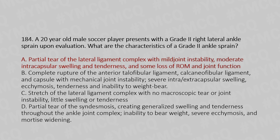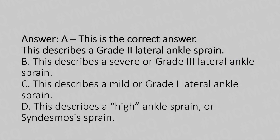And the answer is Option A: partial tear of the lateral ligament complex with mild joint instability, moderate intracapsular swelling and tenderness, and some loss of range of motion and function. Option A describes a grade 2 lateral ankle sprain. Option B describes a severe or grade 3 lateral ankle sprain. Option C describes a mild or grade 1 lateral ankle sprain. Option D describes a high ankle sprain or syndesmosis sprain.